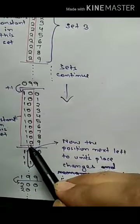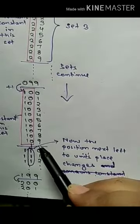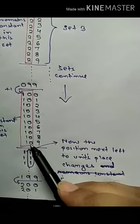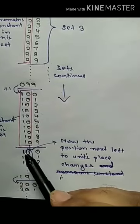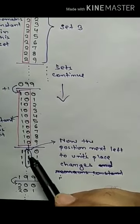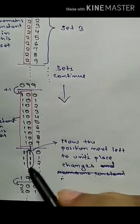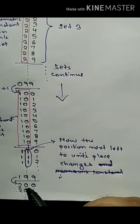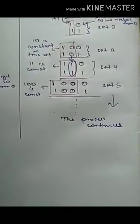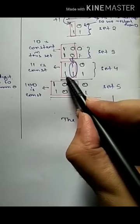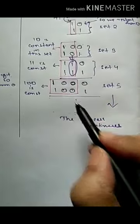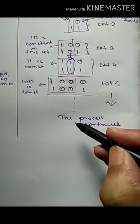Just as in decimal where after 100 the tens place changes — restarting to 0 then changing to 1 — with the hundreds place remaining constant up to 199, the same logic applies in binary. When it reaches 1 in the binary tens place, it becomes 0 and 1 is added to the left, keeping 100 constant in that set. This process continues, mirroring the decimal system's structure.